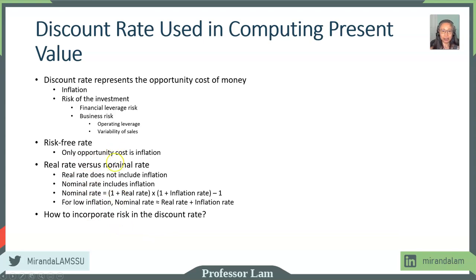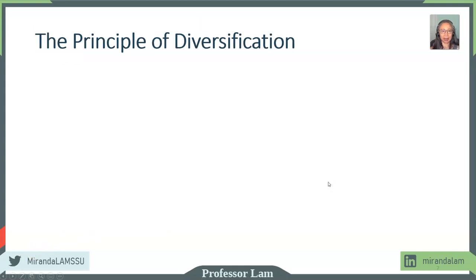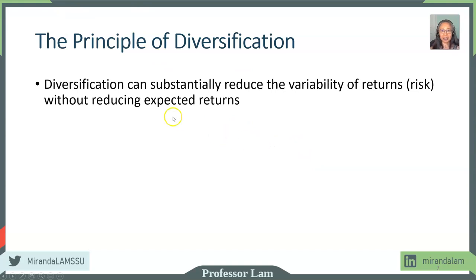We have talked about inflation and the relationship between nominal and real rates. Next, how are we going to account for different kinds of risk in the discount rate? Before we do that, I want to introduce the principle of diversification. Diversification is a sophisticated way of saying don't put all your eggs in one basket. If you spread your investment risk across a large number of different kinds of stocks, you can reduce the risk.